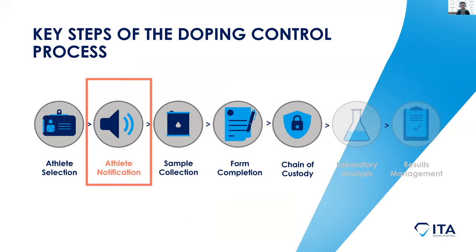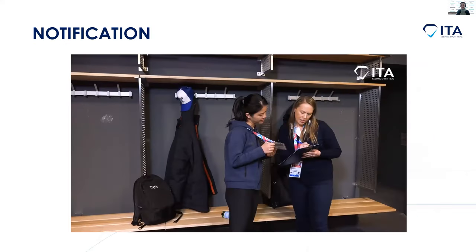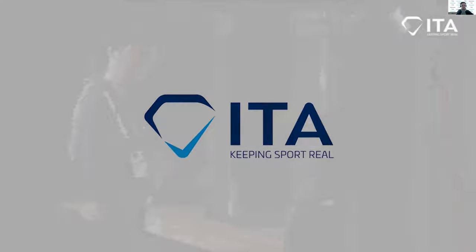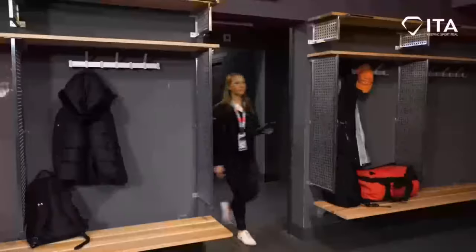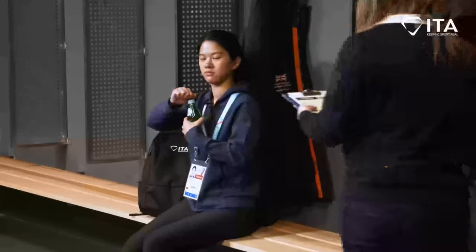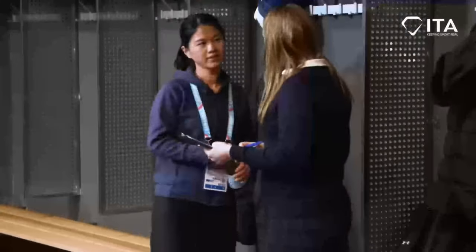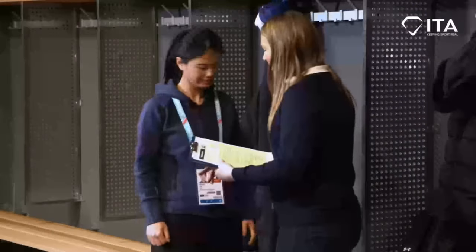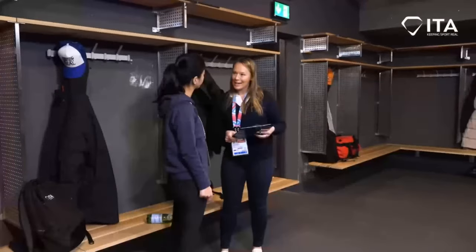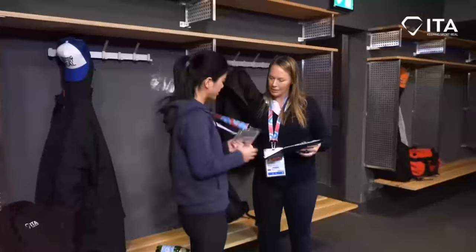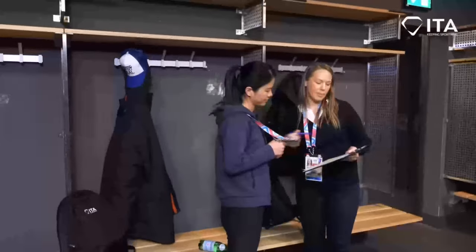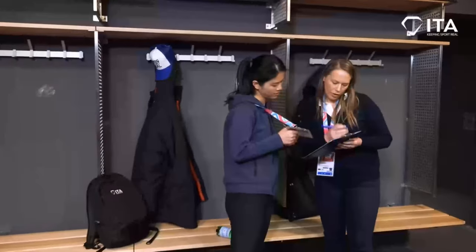Once an athlete has been selected for doping control, they are notified. Let's watch a short video to see how this notification process works. In the video: 'Hello — hi, my name is Alana, I'm from the ITA, the International Testing Agency. You've been identified today for doping control. Can I just check your name please?' 'Yes, I'm Melody.' 'I'll just complete this — this is your notification form, so I'll just copy it off your identification there.'